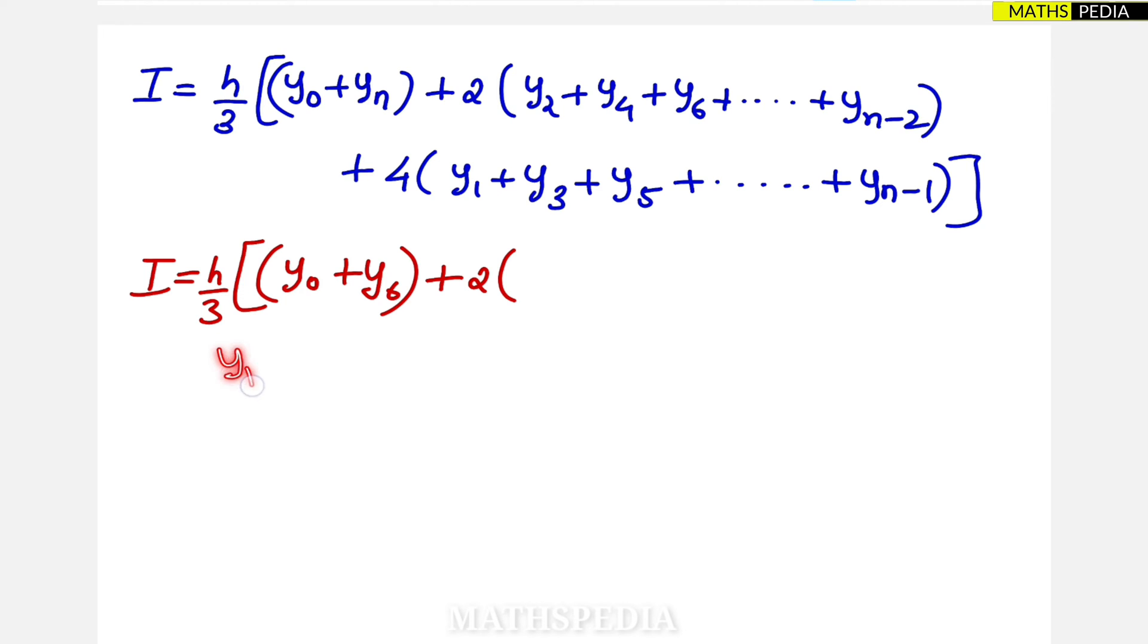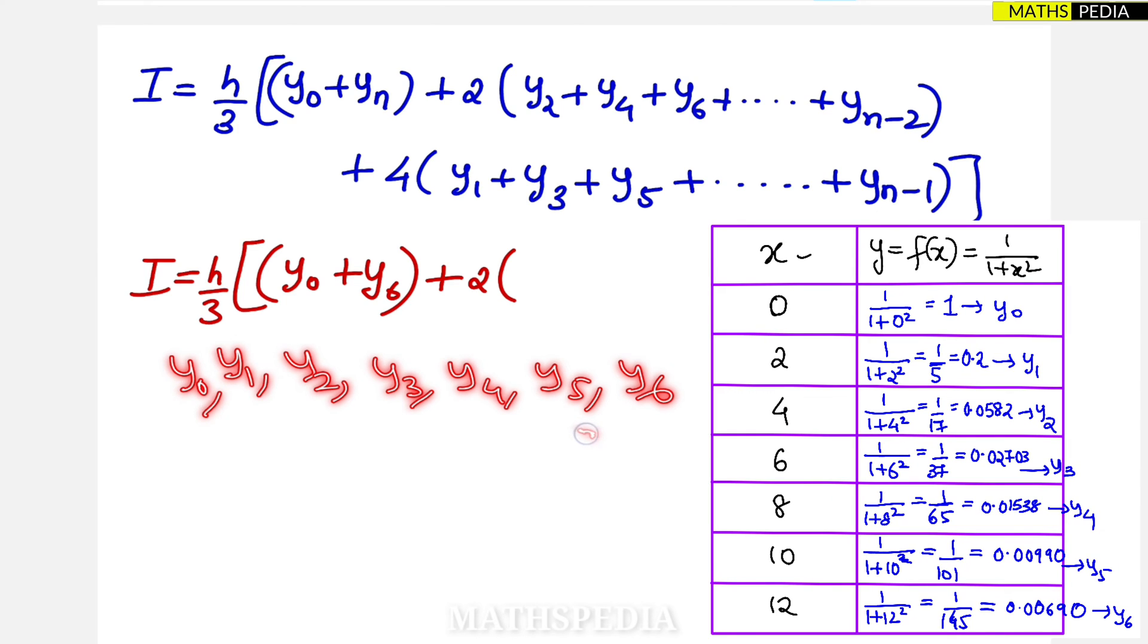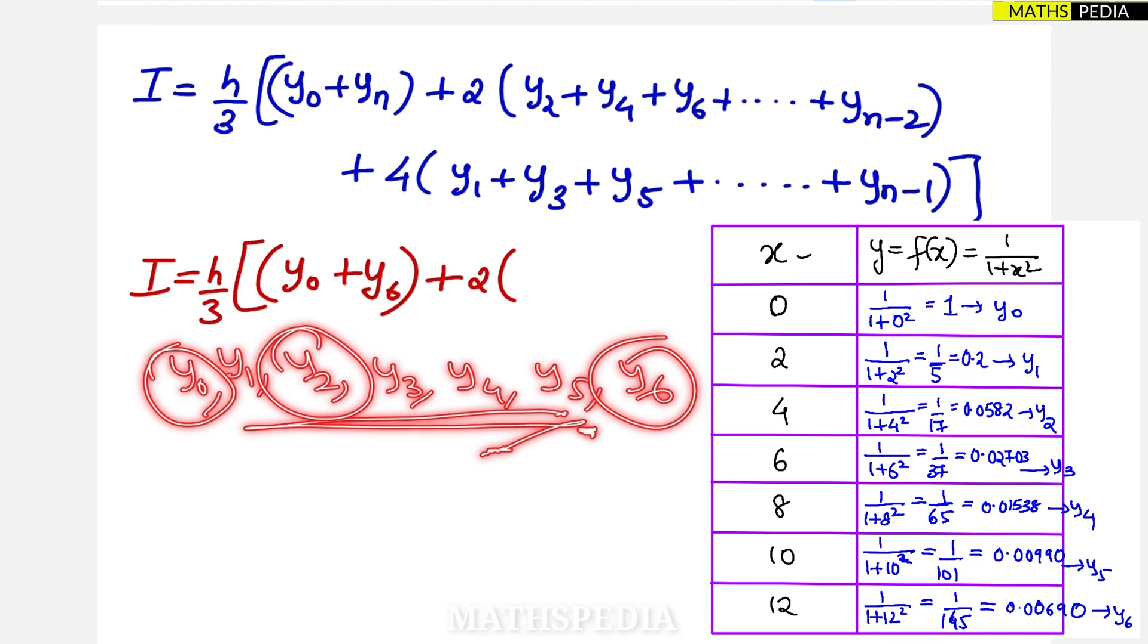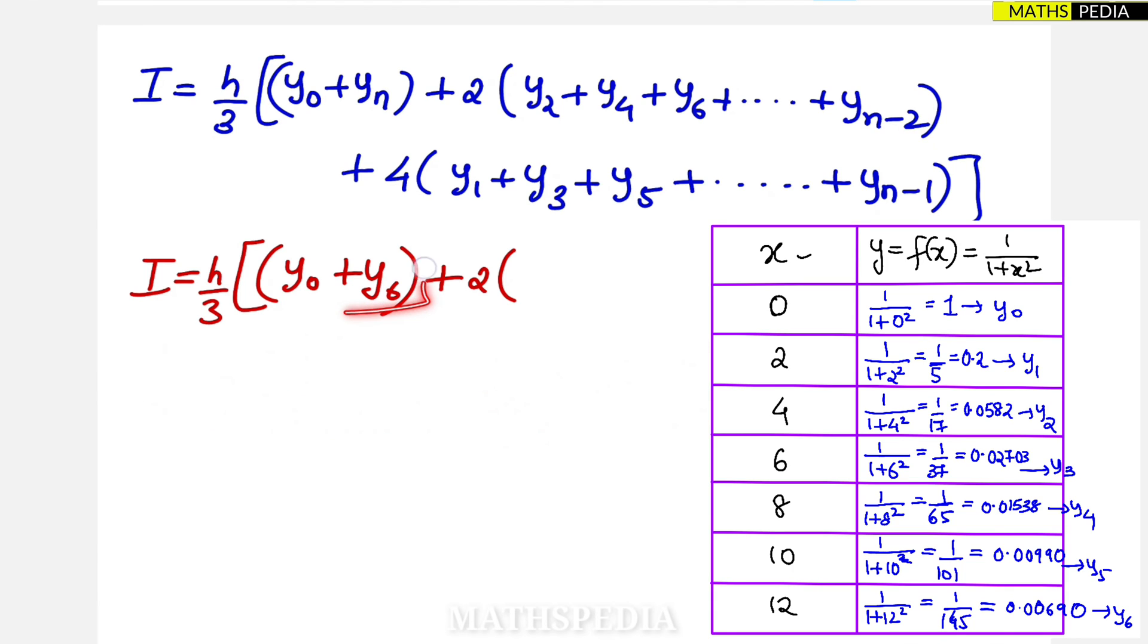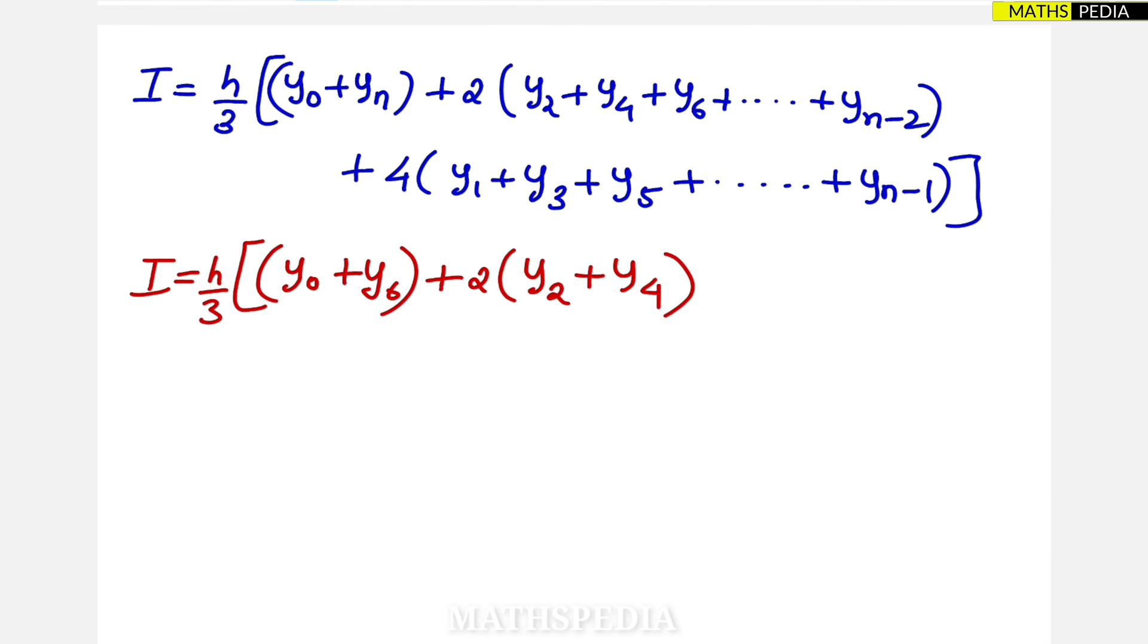And two times of multiples of two terms you have to consider. The thing is that here we calculated y1, y2, y3, y4, y5, y6 and y0 also. So how many total terms were there, seven points we had. In this y0 and y6 I have already taken, so now the remaining terms are y1, y2, y4 and y5. In that multiples of two is nothing but y2, y4. I cannot take y6 because it is already considered here, y6 is already taken. So I cannot mention it here, so two into y2 plus y4.